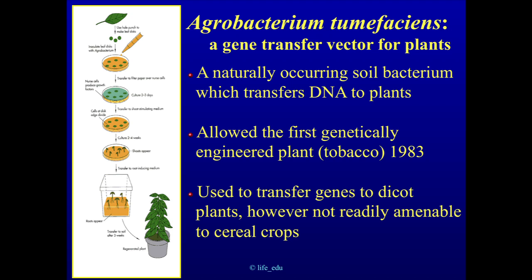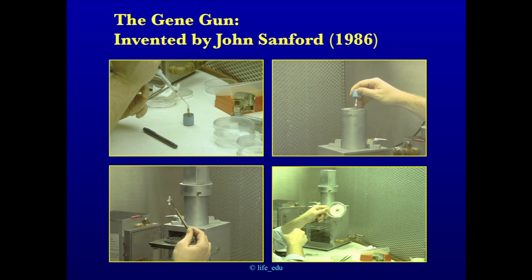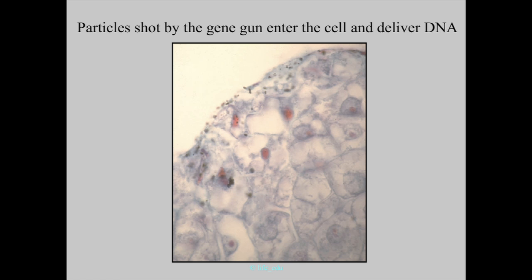Then along comes John Sanford, who develops this technique using a modified .22 caliber pistol chamber. The DNA is delivered with tungsten particles coated with naked DNA coding for resistance to an herbicide. A plastic bullet is loaded in, and a .22 caliber blank is loaded on top. An electric charge made the blank cartridge fire, firing the plastic bullet down into a plexiglass bulletproof stop plate, and the particles went on into the cells. This made the first genetically engineered corn plant.